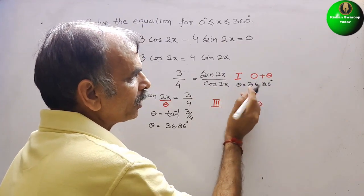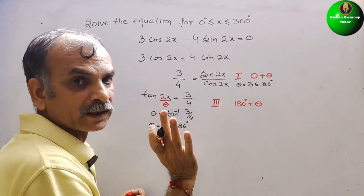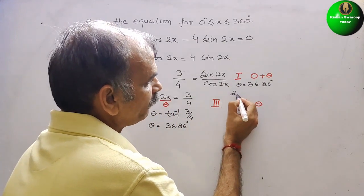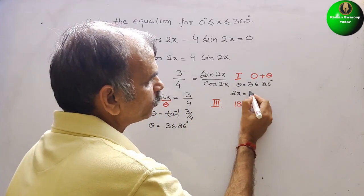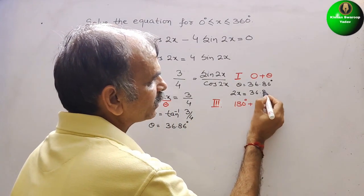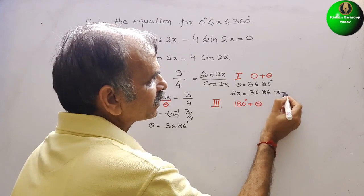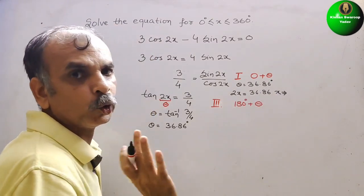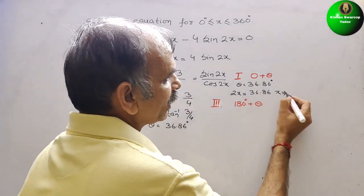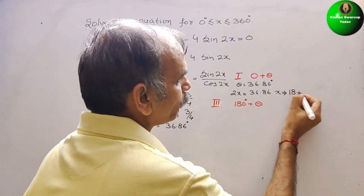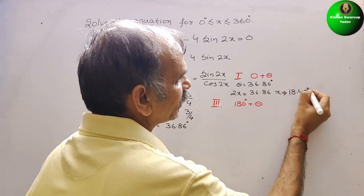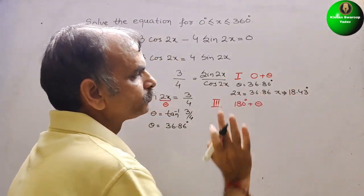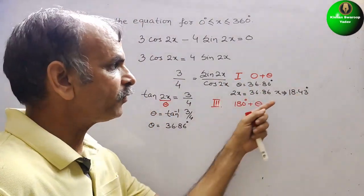That is your theta. But we know that theta is 2x. So here we will write 2x is equal to 36.86. So what is x? We have to divide this by 2. So it will come as 18.43 degree. This is your first solution.